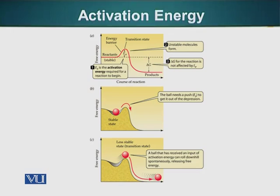In order for reactants to reach the higher energy level of the transition state, they require a little energy. For example, combustion of methane is a very exothermic reaction — it releases a lot of energy.